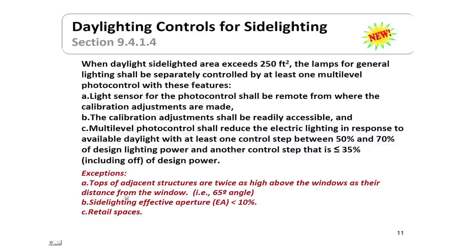If the top of the building next door is 65 degrees up from your window, that's enough to exempt you from daylight controls. If your effective aperture is less than 10%, that's also accepted. Retail spaces are also accepted, because the lighting in those spaces is essentially needed for merchandising purposes.